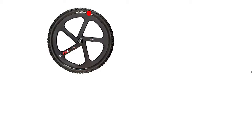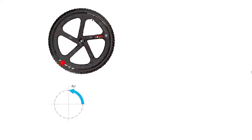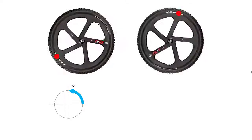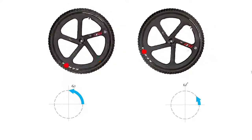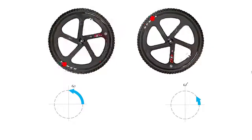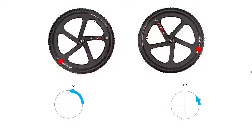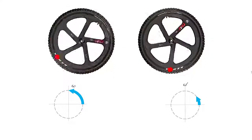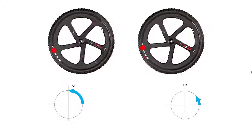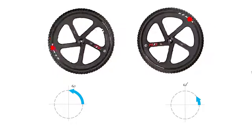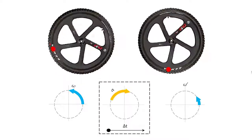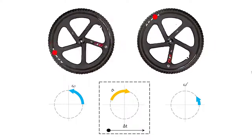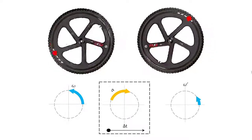Now let's look at another scenario. The wheel is going at a certain angular velocity, then at another point in time it is going slower, depicted with a shorter vector and a prime symbol. Just like linear quantities, a change in velocity means we've had an acceleration. If we are slowing down, we had an acceleration opposite to the direction of travel — in this case, in the clockwise direction.